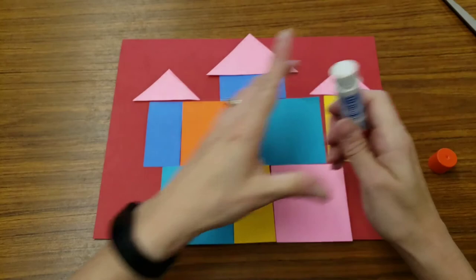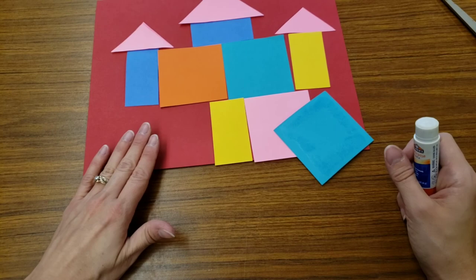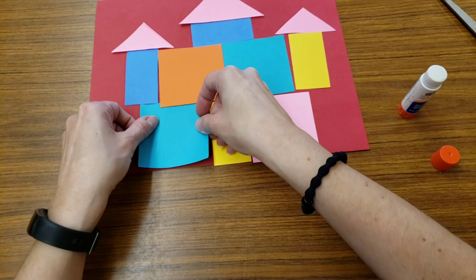Does that look kind of like a castle? Now we glue. I pick up my square and put glue on the outside edges. Did I smear glue all over my paper? No. Did I put glue on the outside edge of my rectangle or my square? Yes.